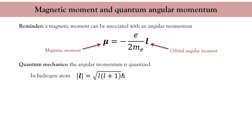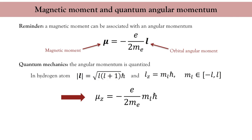The projection of the orbital angular momentum on the quantization axis is M_L times h-bar, where M_L is called the magnetic quantum number and adopts all integer values between minus L and plus L. As a consequence, the projection of the magnetic moment on the quantization axis is simply minus e over 2m_e times M_L h-bar. The magnetic moment associated with the angular momentum is proportional to a quantum of magnetic moment called the Bohr magneton.